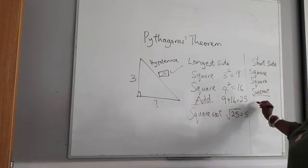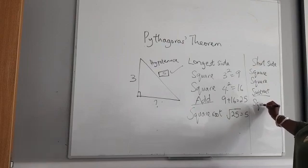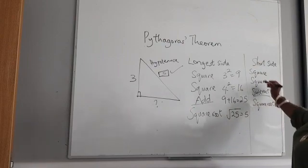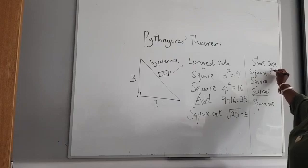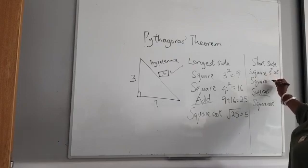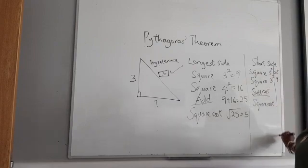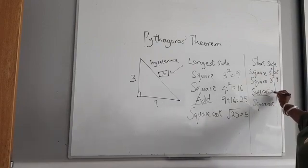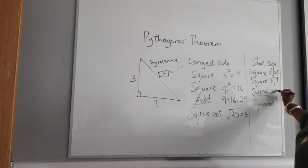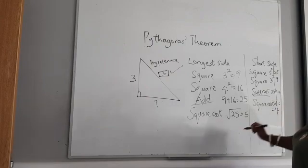And then we're gonna square root. So if we square 5, we get 25. If we do 3 squared, we get 9. And then if we subtract 9 from 25, we get 16. And then square root of 16 gives us 4. And so that's gonna be a 4 here.